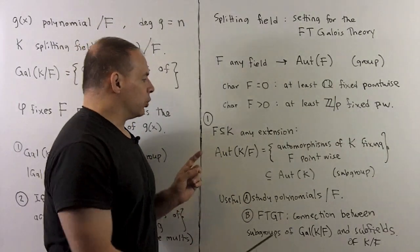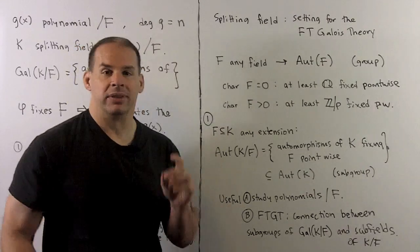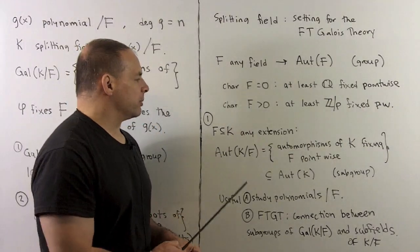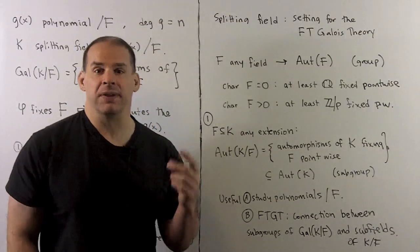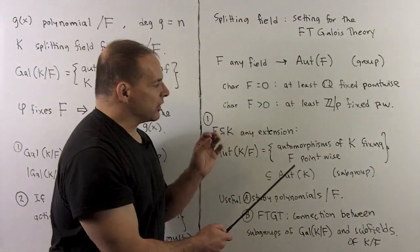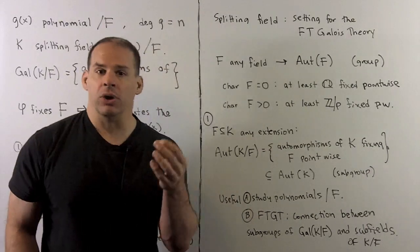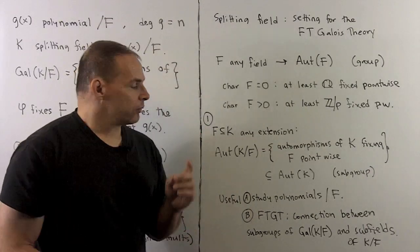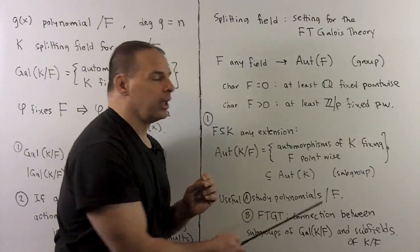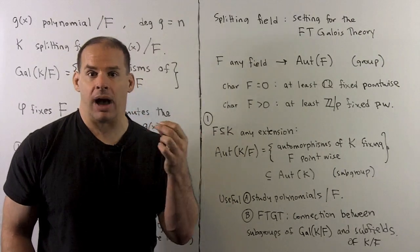Now let's look at subgroups. If I have K any extension of F — not necessarily a splitting field — I consider Aut(K/F), the set of automorphisms of K that fix F pointwise. This is going to be a group; in fact, it's a subgroup of all automorphisms of K. We know this is going to be helpful in studying polynomials with coefficients in F, and we know it's going to play a major part in the fundamental theorem of Galois theory.